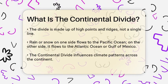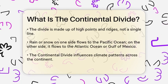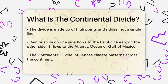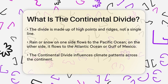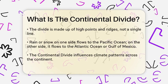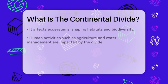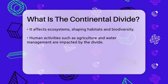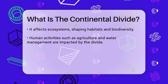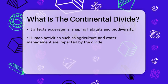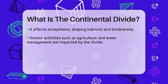This divide is not just a single line — it consists of a series of high points and ridges. Rain or snow that falls on one side of the divide will eventually flow towards the Pacific Ocean, while precipitation on the other side will make its way to the Atlantic Ocean or the Gulf of Mexico.